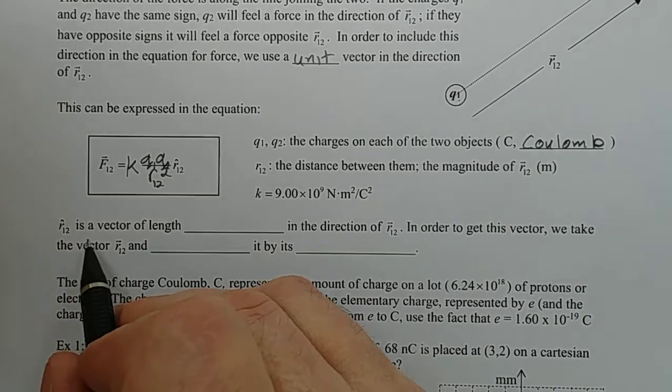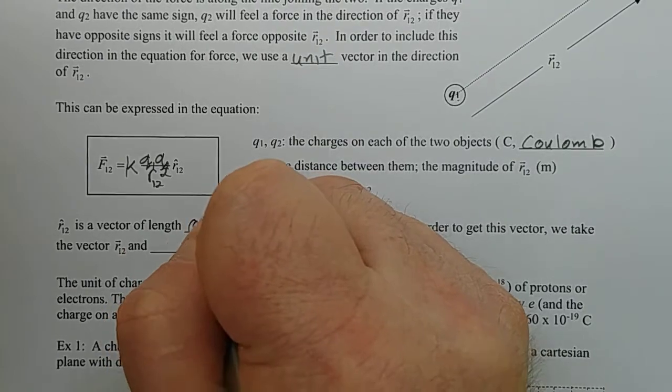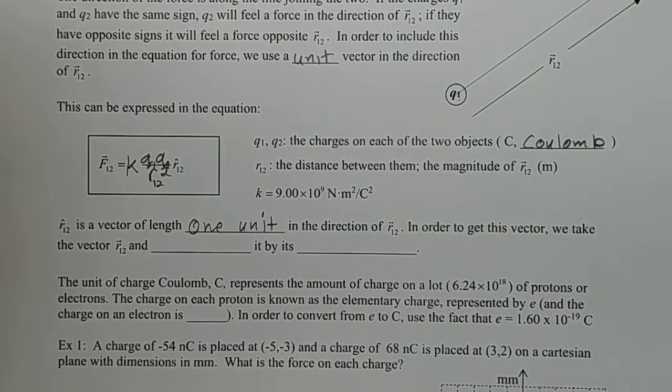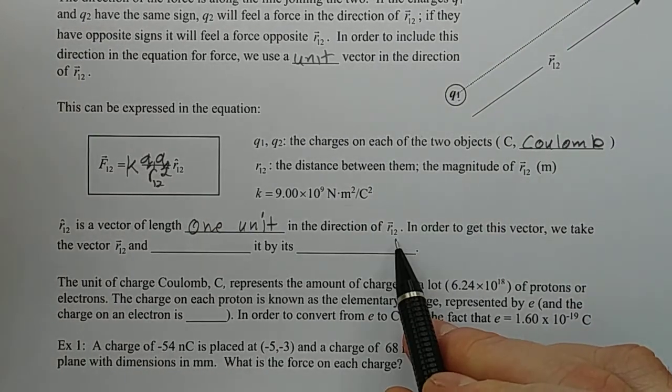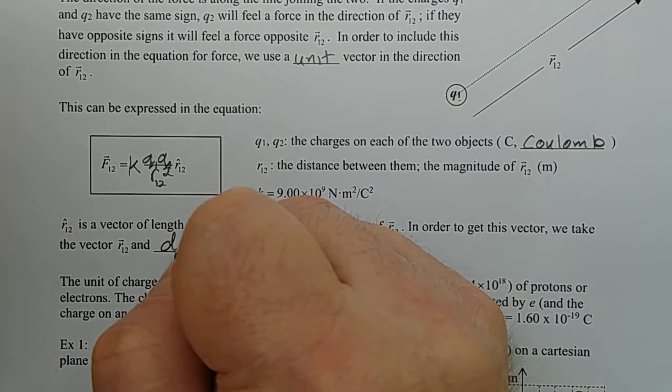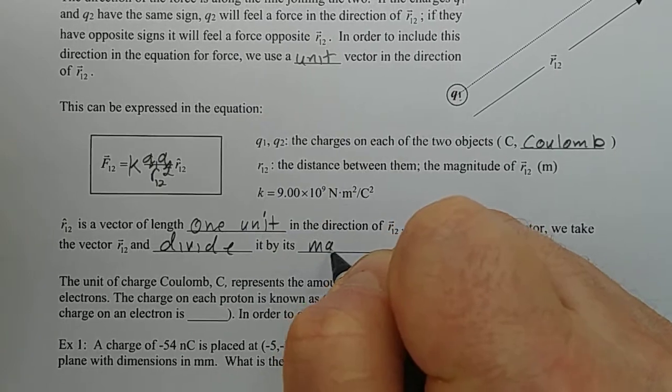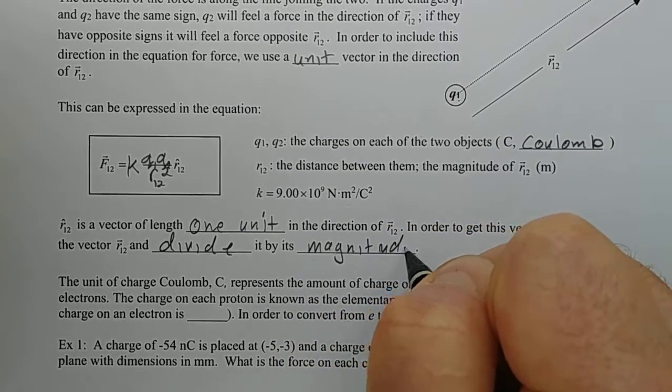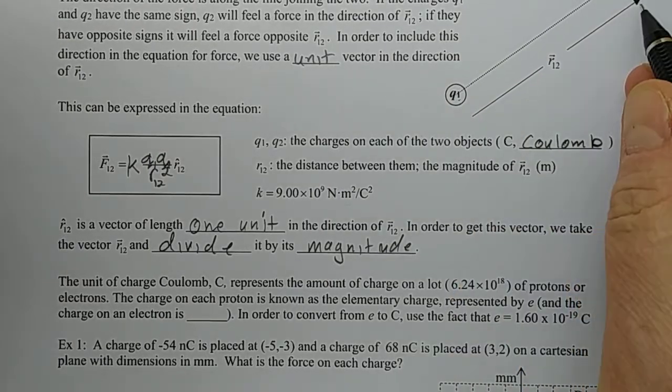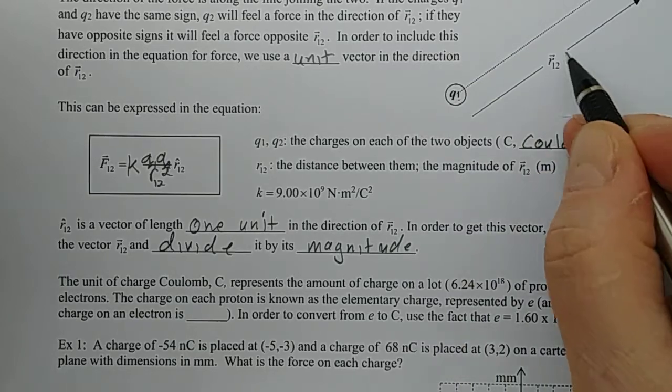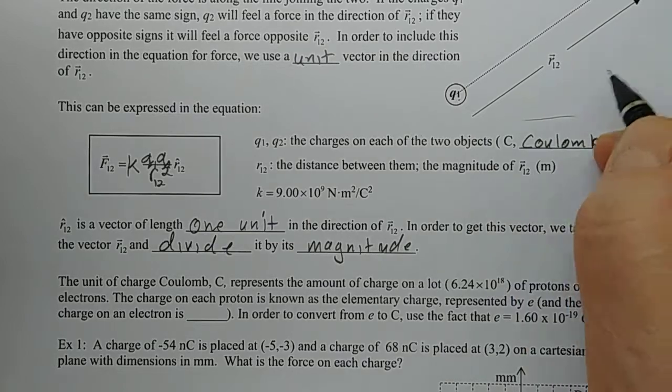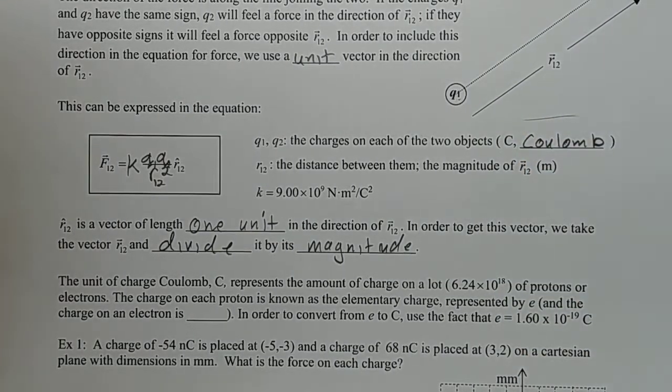As we said before, R12 hat is a vector of length one unit. That special little hat always indicates a vector that is one unit long. And it's in the direction of R12. In order to get that vector, we will take the vector R12 and divide by its magnitude, which is another way of saying that we will take vector R12, which gives the adjacent and the opposite sides, and we will take those adjacent and opposite sides and multiply by the hypotenuse in order to get cos theta and sine theta as relative ratios in order to break down the force into those components.